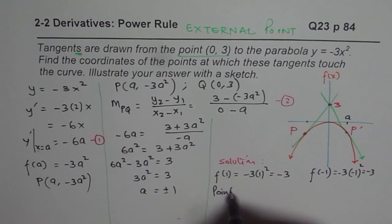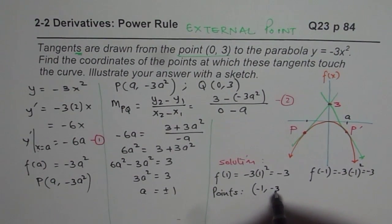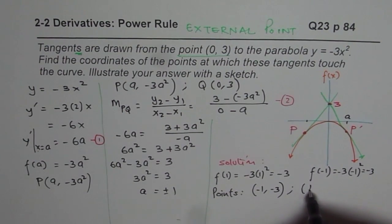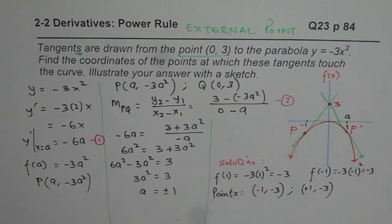The points on the graph are (-1, -3) and (+1, -3). Do you see? So these points are at -1 and +1 for us.